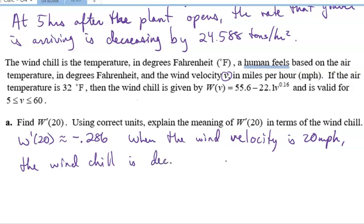And then my units are wind chill. Wind chill is temperature in degrees Fahrenheit. So degrees Fahrenheit. And this is per velocity unit, which is miles per hour. So degrees Fahrenheit per mile per hour. Which seems like a weird unit, but it's the appropriate unit for this problem.